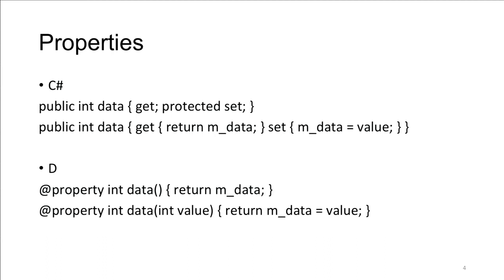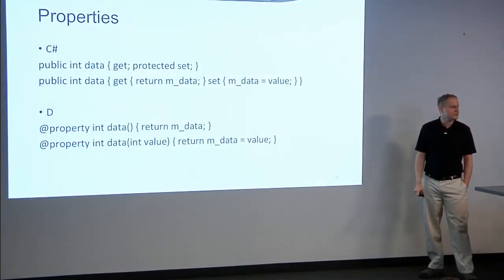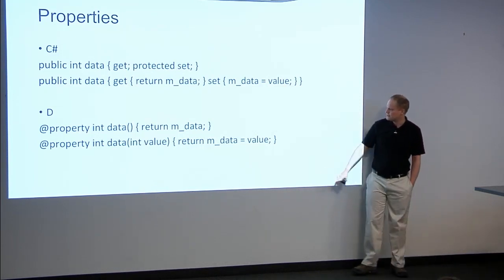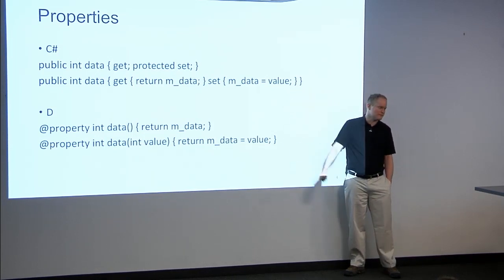The first thing we're going to get into is properties — I'm going to poke some eyes here. In C#, we have two different ways to declare a property. The first makes a field with property syntax — you say I want a getter, and I can make the setter protected. The bottom one is a standard property. The upper syntax is newer and was not in the initial release of C#. In D, we only have one way to do it, and it most clearly maps to the standard syntax.